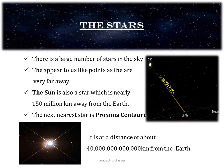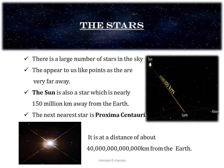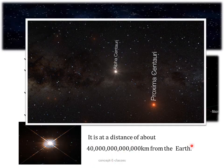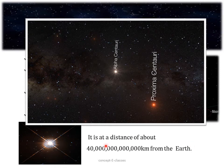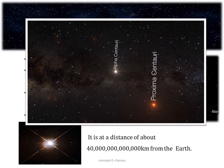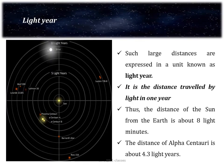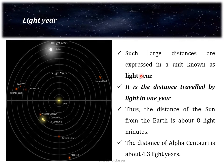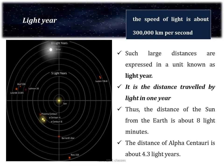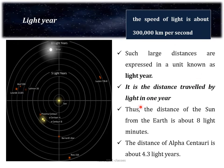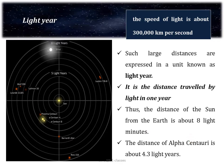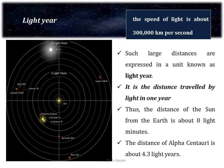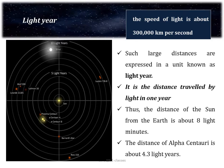The next nearest star to the earth is Proxima Centauri. It is inconvenient to describe such distances in kilometers, so we use a unit called a light year. A light year is the distance traveled by light in one year. The speed of light is 3 × 10⁸ meters per second. The distance of the sun from the earth is about 8 light minutes, and the distance of Alpha Centauri is about 4.3 light years. In short, distances of objects in the universe are expressed in light years.